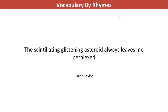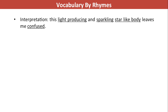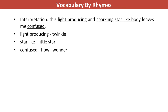Let's interpret. Scintillating means something that produces light. Glistening means something that sparkles. Perplexed means confused. So it's something producing light, sparkling, and it leaves this person confused. The light-producing or sparkling star-like body — asteroid, which we know looks like a star — leaves me confused. Light-producing or sparkling relates to 'twinkle,' star-like is 'little star,' and confused means 'how I wonder.' So the nursery rhyme coded was 'Twinkle, Twinkle, Little Star.'